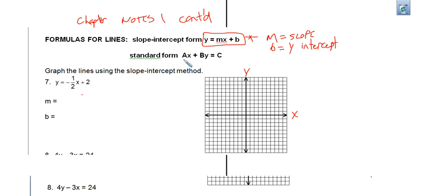And then the standard form, it's just a way to rewrite an equation of a line. But a, b, and c must be integers. Whole numbers. No decimals, no fractions. And also, the only one that must be positive is a.